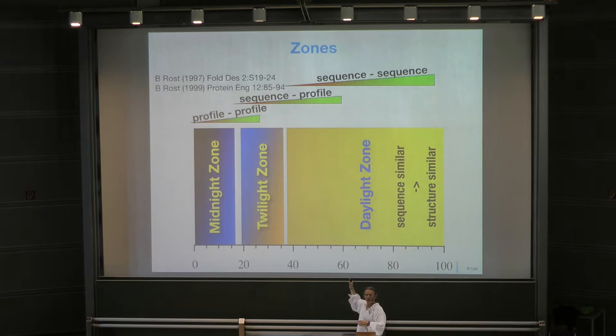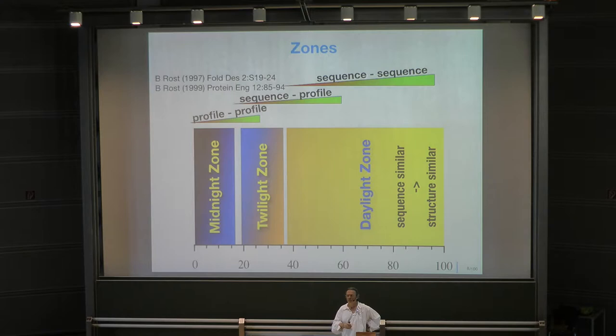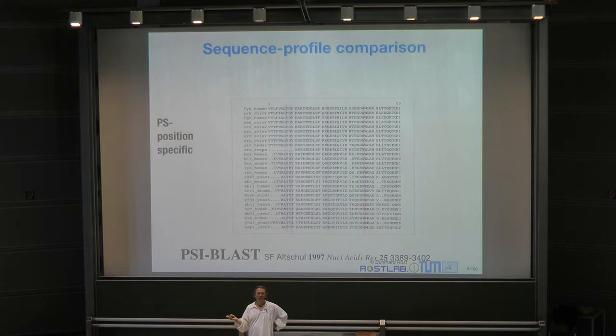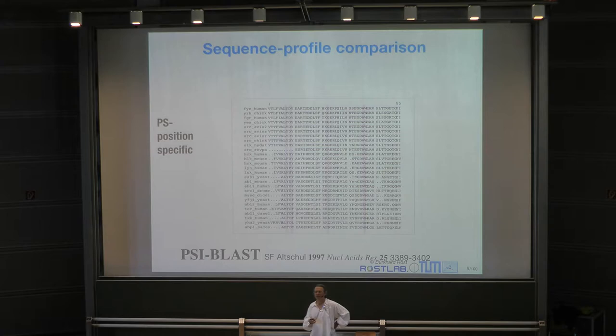A student asks how to build the family in the first place. The instructor responds: how do I get this profile? How do I get this group of related sequences? It may not hurt if you know about hashing, what the problems of hashing are in this context, and that this is called BLAST. If you know the idea of dynamic programming, that's the kind of thing I want you to understand.